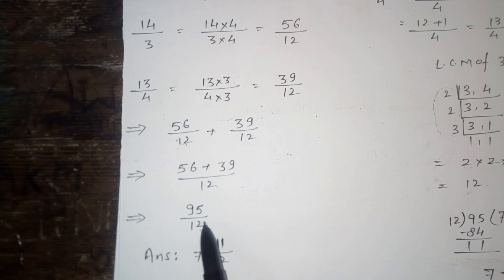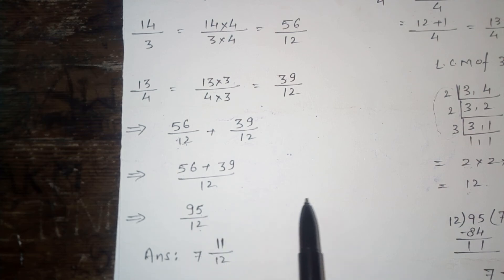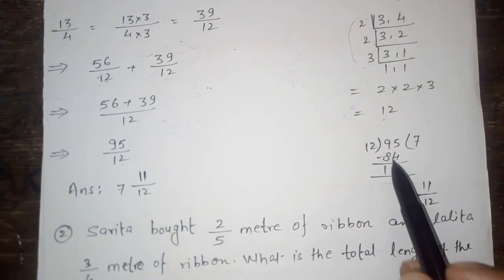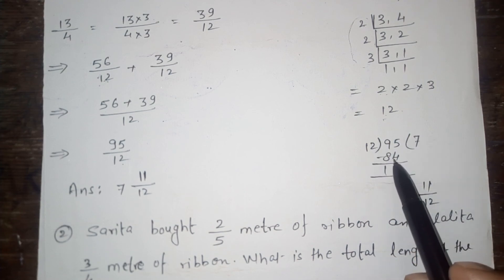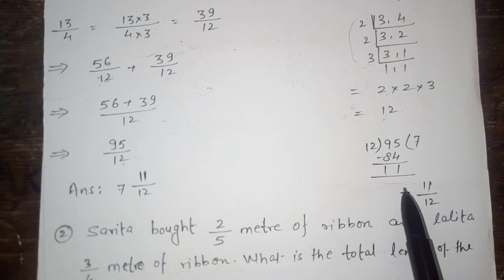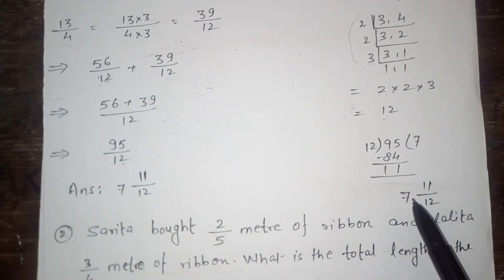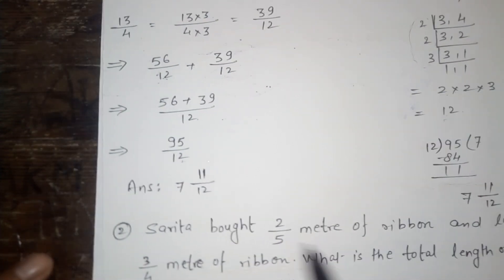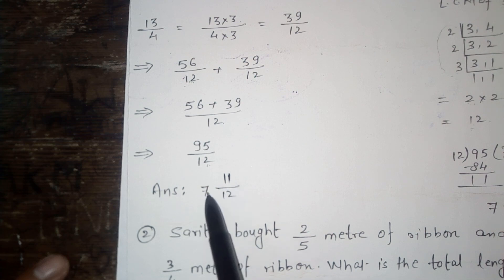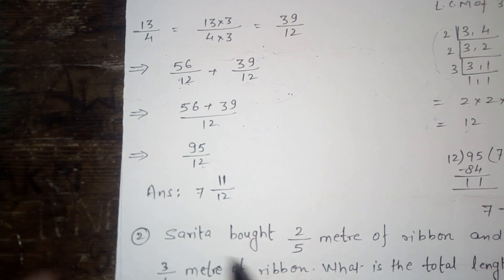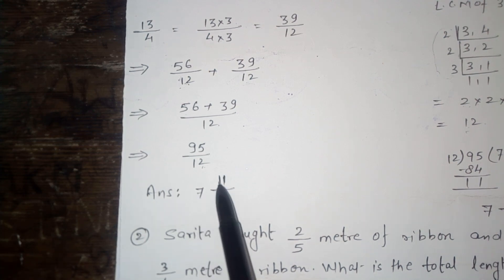95 upon 12 is an improper fraction, and an improper fraction must be converted to a mixed fraction. Look here: dividing 95 by 12, 12 × 7 = 84, and after subtraction the remainder is 11. So 95 upon 12 as a mixed fraction is 7 and 11 upon 12. The required answer of the given question is 7 and 11 upon 12.